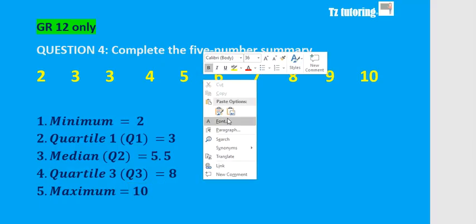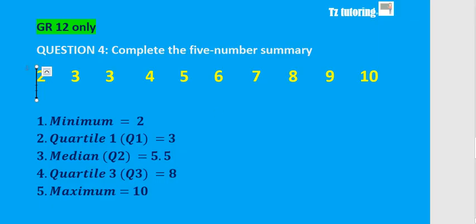Then the median. We've already looked at this. How do you calculate the median? The median is the middle value. We looked at this when we did question two. The middle value is between five and six.